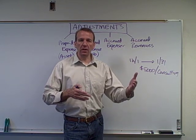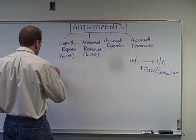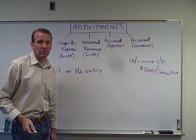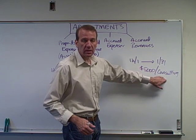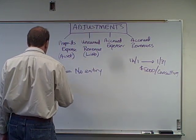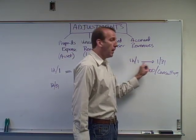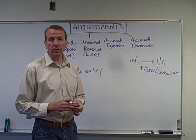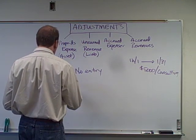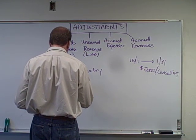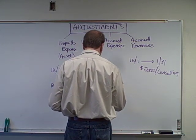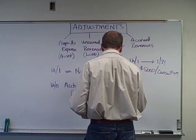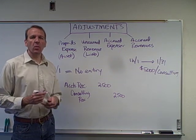On December 1st there's no entry because we're not receiving any cash — we're the ones doing the consulting work. Now on December 31st, we've been doing consulting work for a month. This contract is for two months, so under accrual basis accounting we get to recognize the revenue we've earned. We've earned half, or $2,500. So we record accounts receivable of $2,500 and recognize consulting revenue of $2,500 at December 31st.